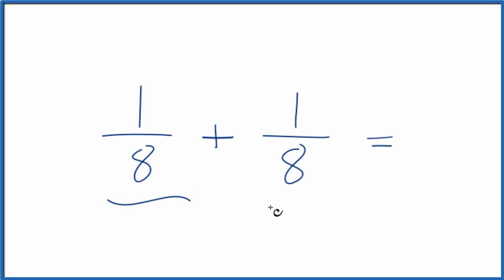Let's add the fractions one-eighth plus one-eighth. To add fractions, we need to get the denominator to be the same. The denominator, that's the number on the bottom here. At this point, the denominator for one-eighth plus one-eighth is the same. We have a denominator of eight.